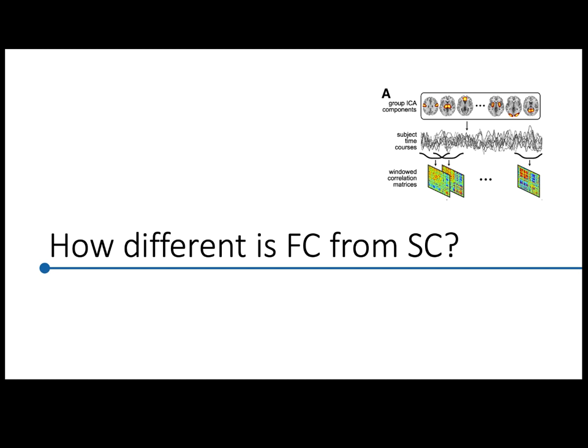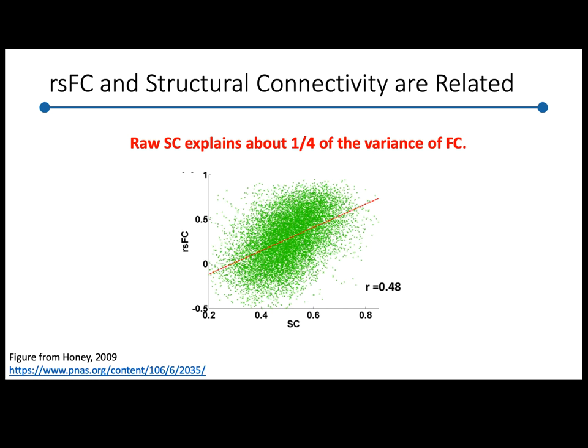How different are structural and functional connectivity from each other? This is important because if they're exactly the same, there's no point measuring both. Resting state functional connectivity — recorded while you're not doing anything in the scanner — is related to structural connectivity, and pretty strongly. One paper gave a precise measure: raw structural connectivity explains about a quarter of the variance of functional connectivity. Since R is about 0.5, the variance explained is R-squared — a quarter.